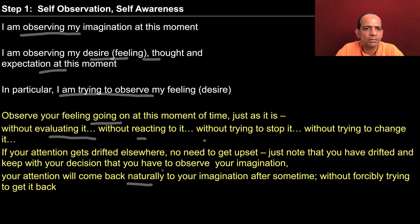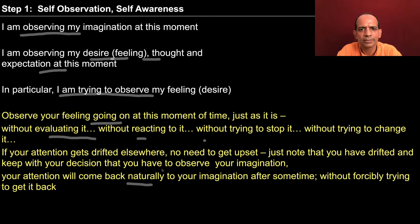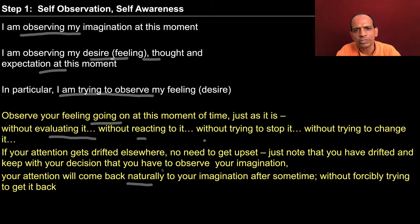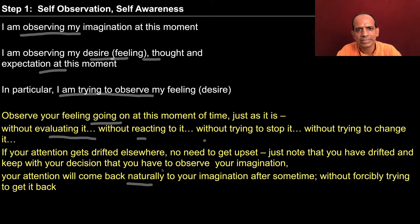This is all we wanted to convey in step one of exercise one. Essentially you have to observe your imagination. If not able to observe it completely, observe your thought. If not able to observe the thought, try to find out the object of attention. Note it down in a journal, look at the linkages between the dots you marked, try to see what was the thought and what was the feeling, and gradually you will develop the competence to observe your feeling, thought, and expectation simultaneously.